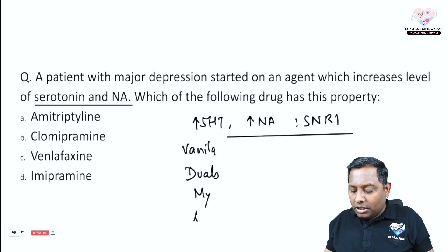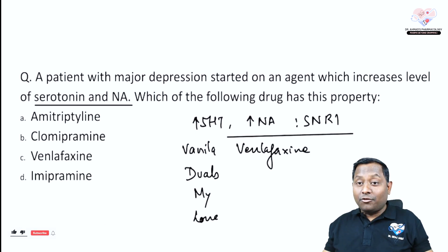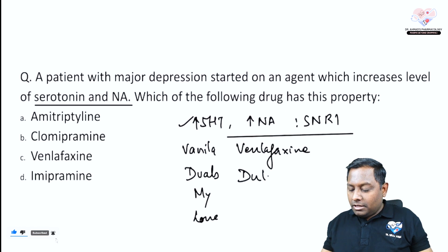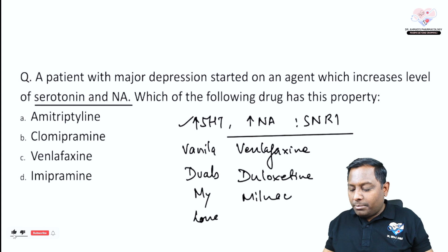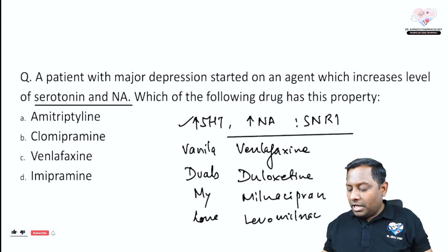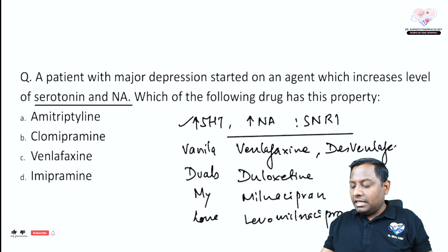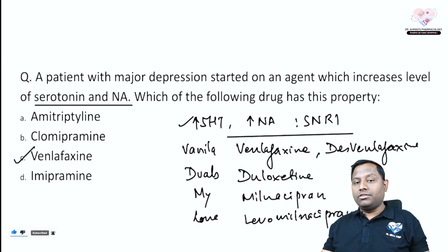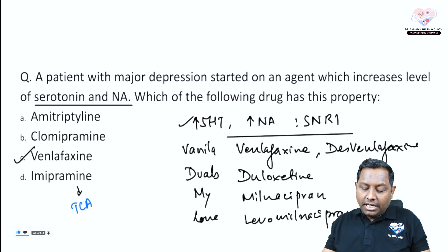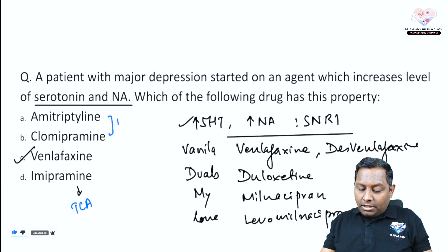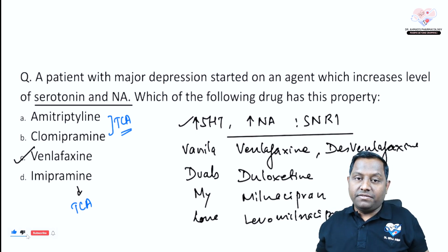Use the mnemonic: 'Vanilla Duals My Love' — Venlafaxine, Duloxetine, Milnacipran, and Levomilnacipran are the SNRIs. Venlafaxine also has a metabolite called desvenlafaxine, which is less cardiotoxic than venlafaxine itself. Imipramine, amitriptyline, and clomipramine also inhibit reuptake of these neurotransmitters but are classified as tricyclic antidepressants (TCAs), not specifically SNRIs. The specific SNRI here is venlafaxine — the correct answer.